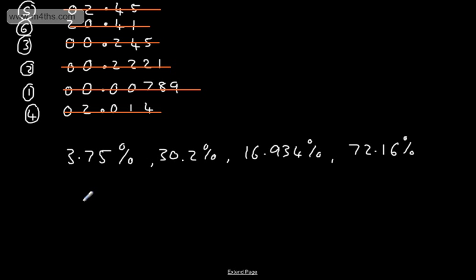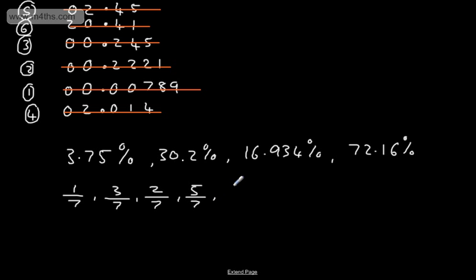Let's now look at ordering fractions. If we have fractions with common denominators, this is really quite straightforward. So if we had 1/7, 3/7, 2/7, 5/7, and 6/7, we would just look at the value of the numerator. We can see that 1/7 is the smallest, then 2/7, then 3/7, then 5/7, and then 6/7 is the largest, as we've got a common denominator.